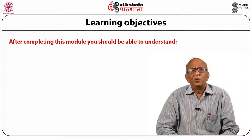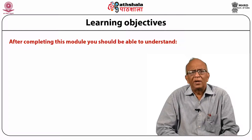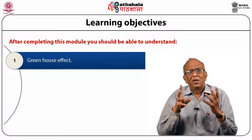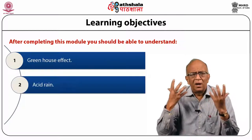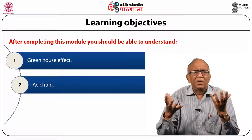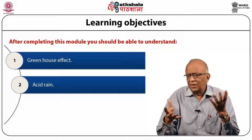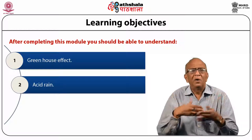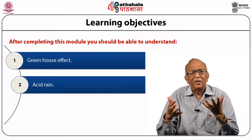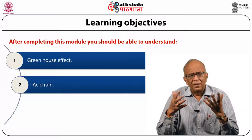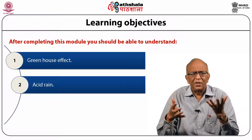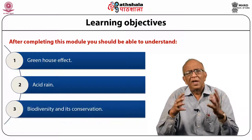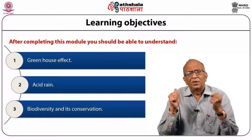The module learning objectives are: what is the greenhouse effect, how acid rain occurs, how it affects us, and we shall also study biodiversity and its conservation.